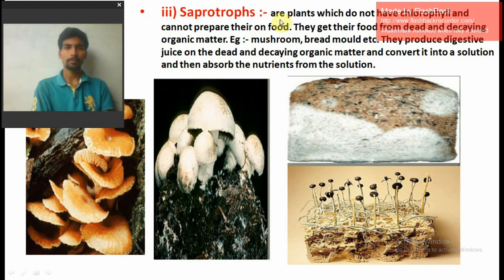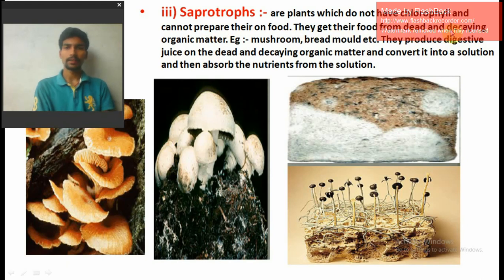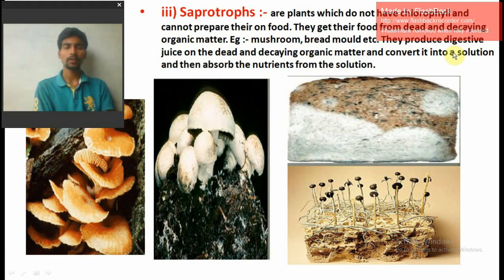Saprotrophic plants are plants which do not have chlorophyll and cannot prepare their own food. They get their food from dead and decaying organic matter. For example, mushrooms, bread mold, etc. They produce digestive juice on the dead and decaying organic matter, convert it into a solution, and then absorb the nutrients from the solution.